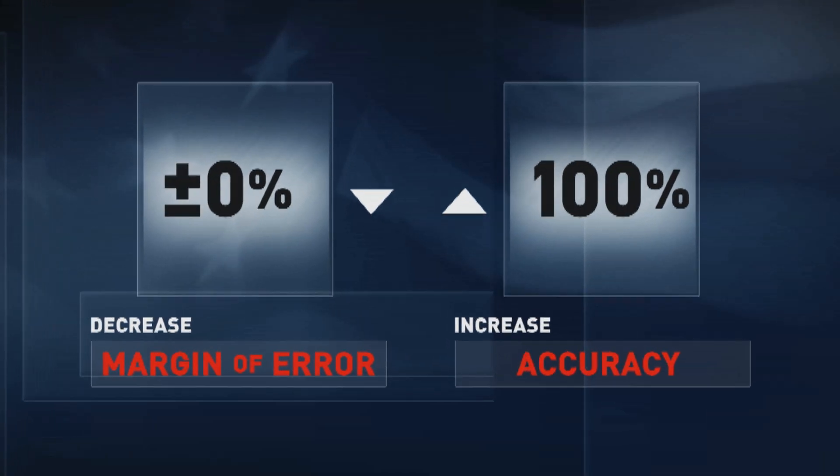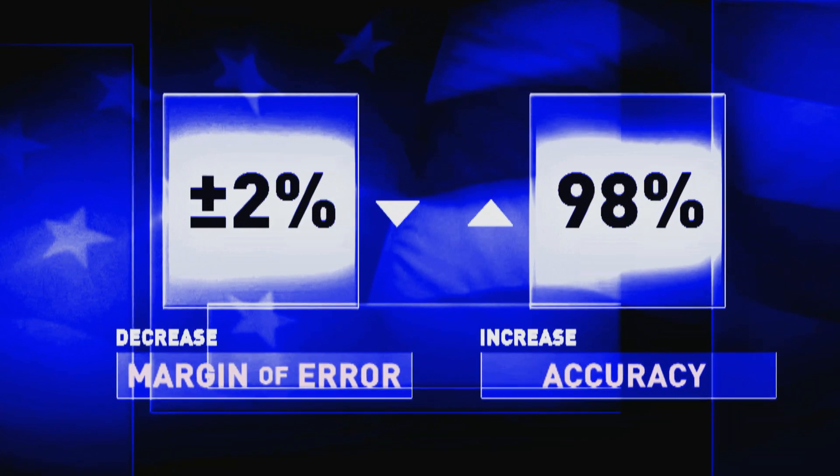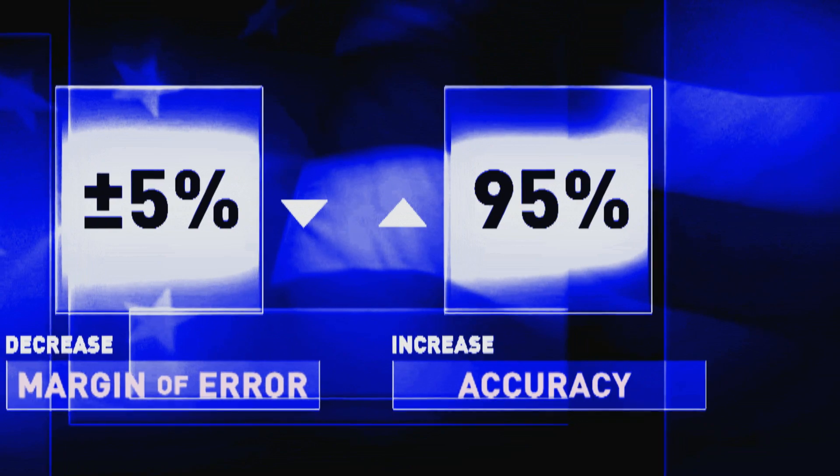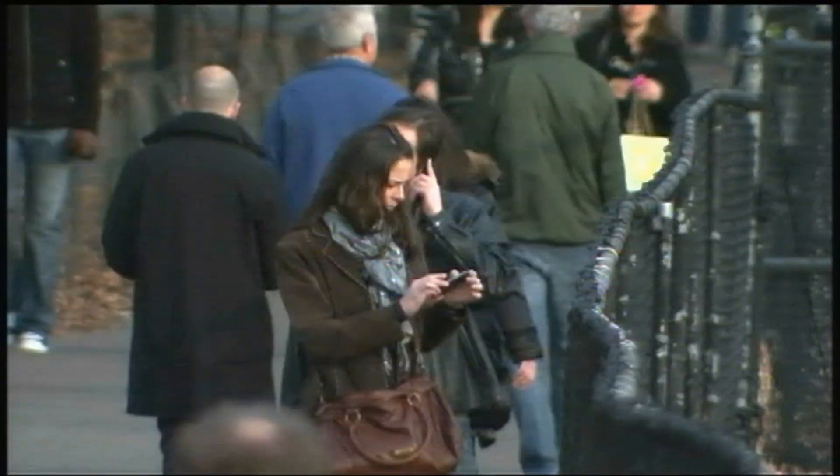What that means is that the number reported in that survey could be three to five percentage points higher or lower, but we know it's in that range. Even though polls rely on just a slice of the population to gauge public opinion, they are far more accurate than you might think.